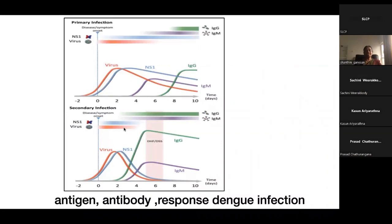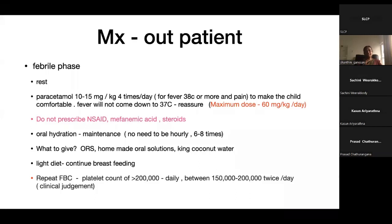The viremia may be more severe in primary infection, so we more commonly get positive NS1 reports in primary dengue. It is now available, though it may not be available in the state sector. If available, it is good to perform an NS1 antigen test with the first full blood count done after 48 hours.